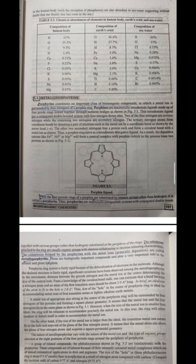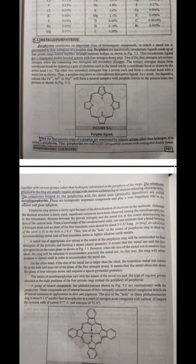Thus, porphyrins are macrocyclic tetrapyrrole systems with conjugated double bonds together with various groups other than hydrogen substituted at the periphery of the rings. The substituents attached to the ring are usually organic groups with electron-withdrawing or electron-releasing characteristics. The complexes formed by the porphyrins with metal ions are called metalloporphyrins. These are biologically important compounds and play a very important role in the animal and plant kingdom. The porphyrin ring system is fairly rigid because of the delocalization of electrons in the molecule.